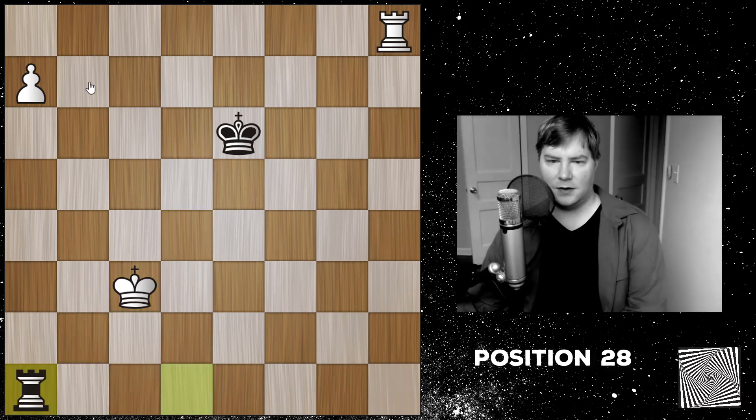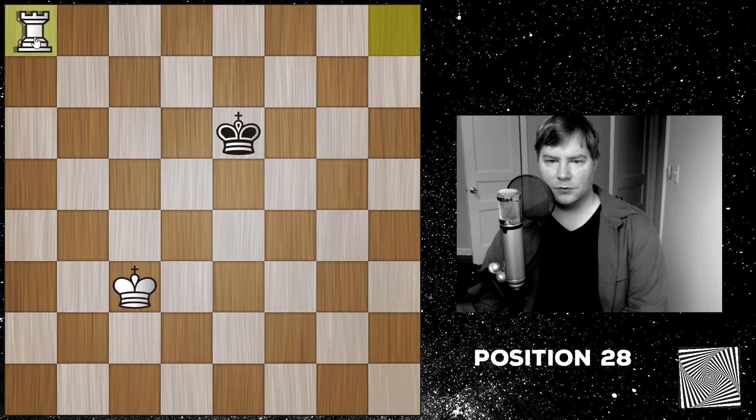So he'd have to play something like rook to a1, and just give up his rook. And now again, it's an easy win.